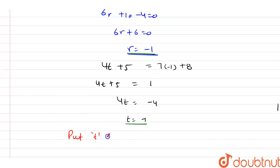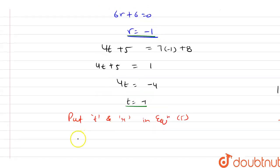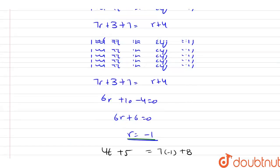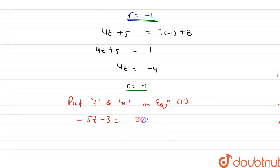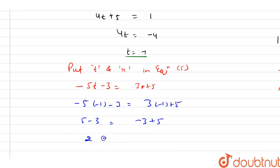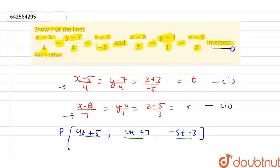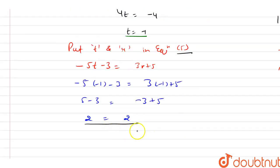Now putting t = -1 and r = -1 into equation 5: -5(-1)-3 = 3(-1)+5, which gives 5-3 = -3+5, that is 2 = 2. Since t and r satisfy equation 5, we can say these lines are intersecting lines. These lines intersect each other, and this is our answer.